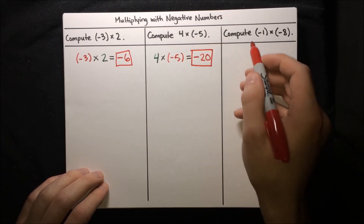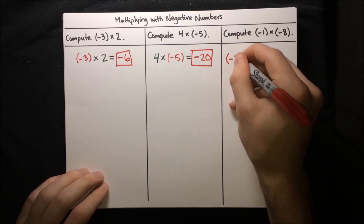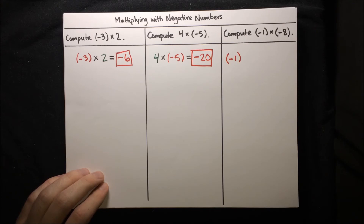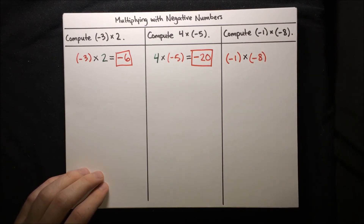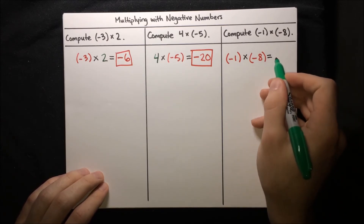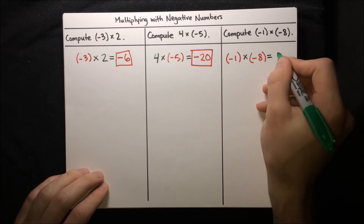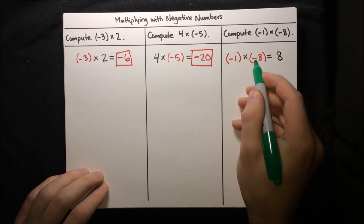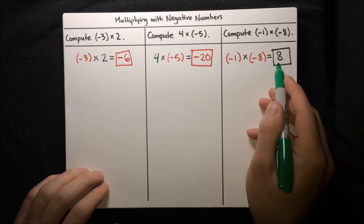Last one: compute negative 1 times negative 8. We have negative 1, a negative number, times negative 8, another negative number. Since there are two negatives, they cancel out and the result is positive. 1 times 8 is just 8, and we keep that positive because the negatives cancel each other. So the result is positive 8.